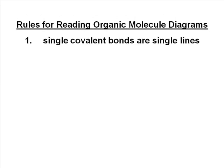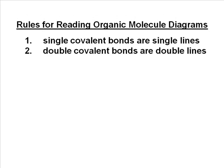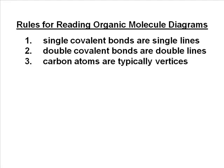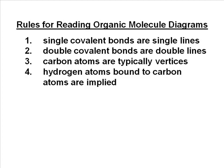Single covalent bonds are single lines. Double covalent bonds are double lines. We've seen that before. Carbon atoms are typically vertices. We don't show them. Hydrogen atoms bound to carbon atoms are implied. We definitely don't show them if we don't have to.